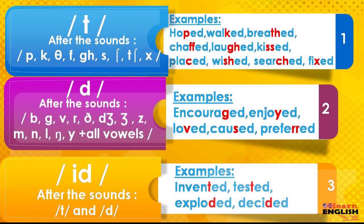When do we pronounce ED as /id/? We've got just two sounds: /t/ and /d/. When you find /t/ before ED, or /d/ before ED, automatically the pronunciation is /id/. Examples: invented, tested, exploded, decided. This is the simplest one.